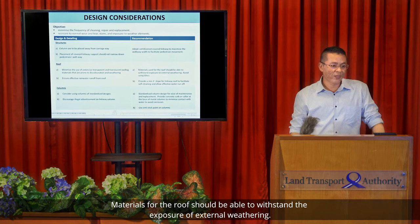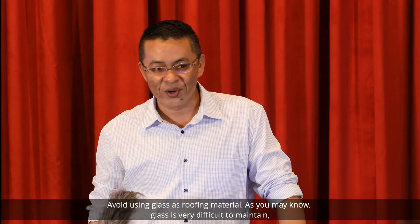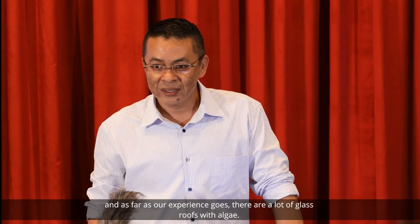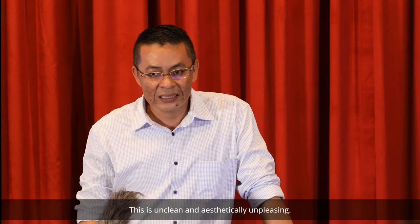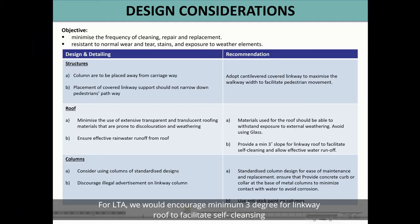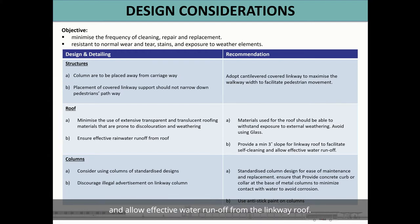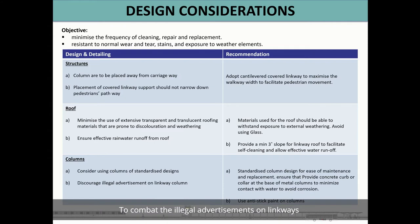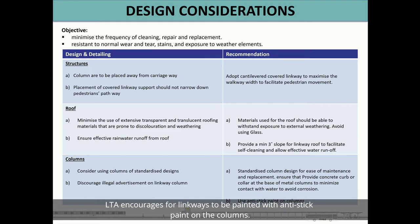Roof material should be able to withstand exposure to external weathering — avoid using glass. Glass is very difficult to maintain, and from our experience, glass roofs with algae growth are unclean and aesthetically unpleasing. LTA encourages a minimum 3-degree slope for Linkway roofs to facilitate self-cleansing and allow effective water runoff. Column sizes should be modular — standardised column design means ease of maintenance and replacement. To combat illegal advertisement on Linkways, LTA encourages painting columns with anti-stick paint.